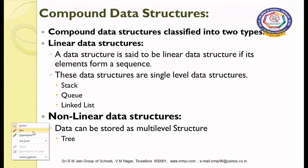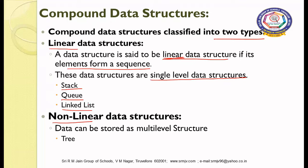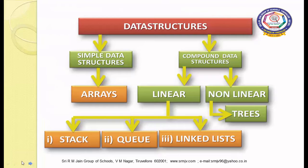Compound data structures are further categorized into two types: linear and non-linear. A data structure is said to be linear if the elements form a sequence. These are single-level data structures, and examples include stacks, queues, and linked lists. In non-linear data structures, data can be stored in multi-level structures — for example, trees.